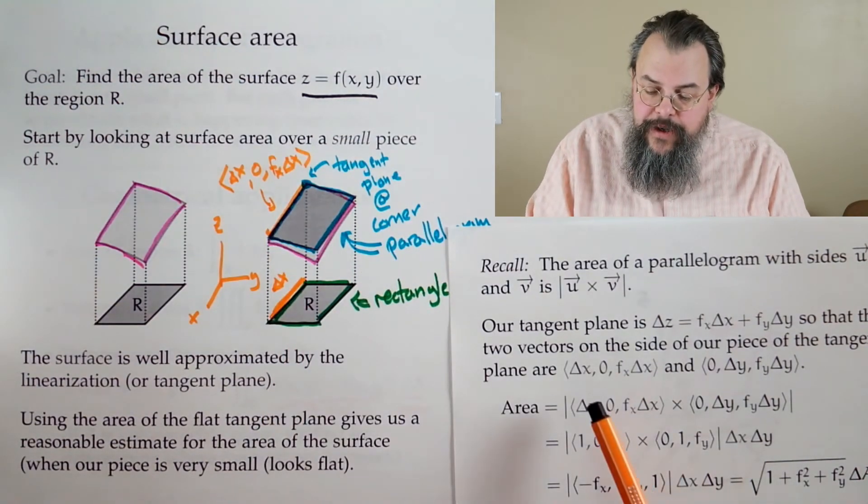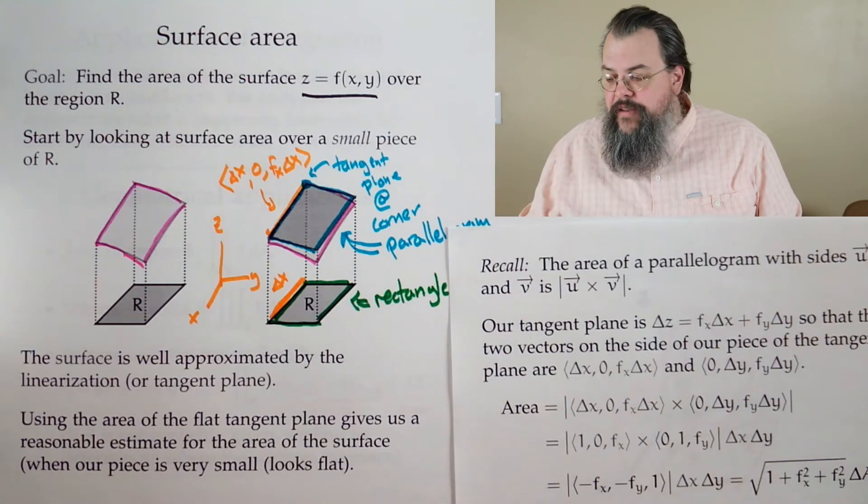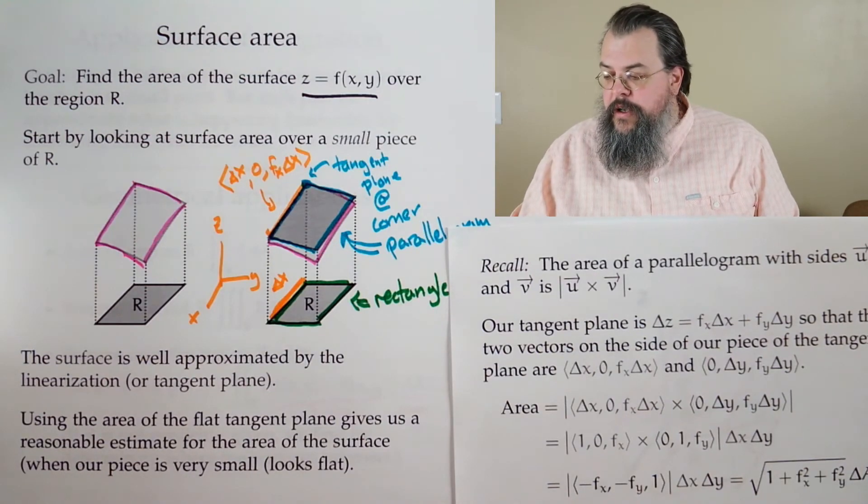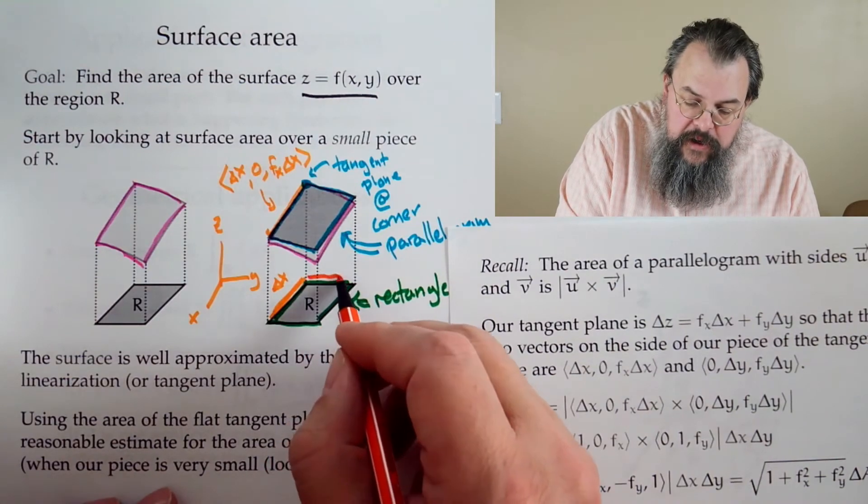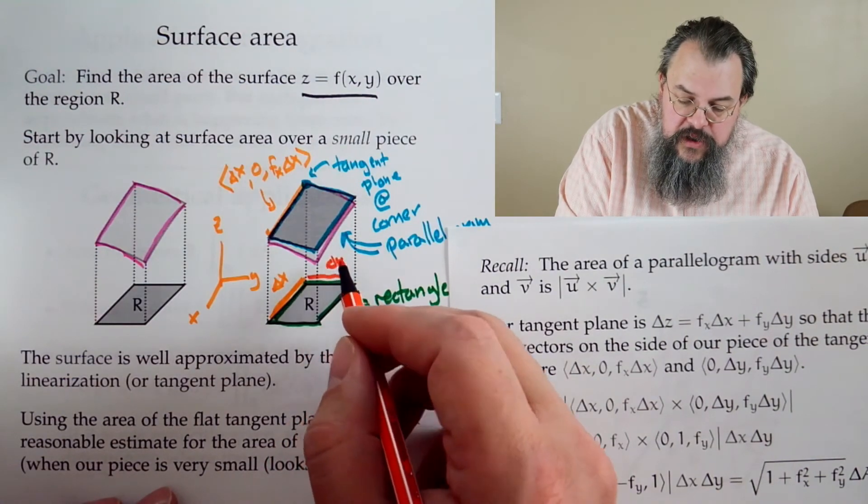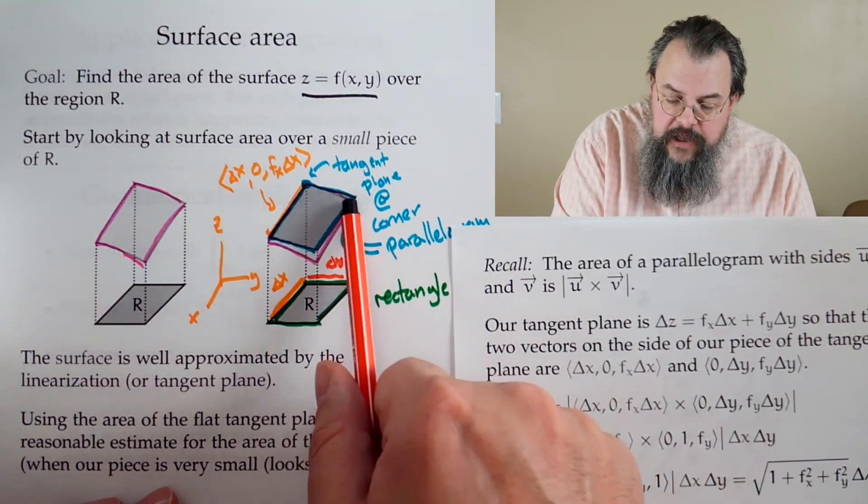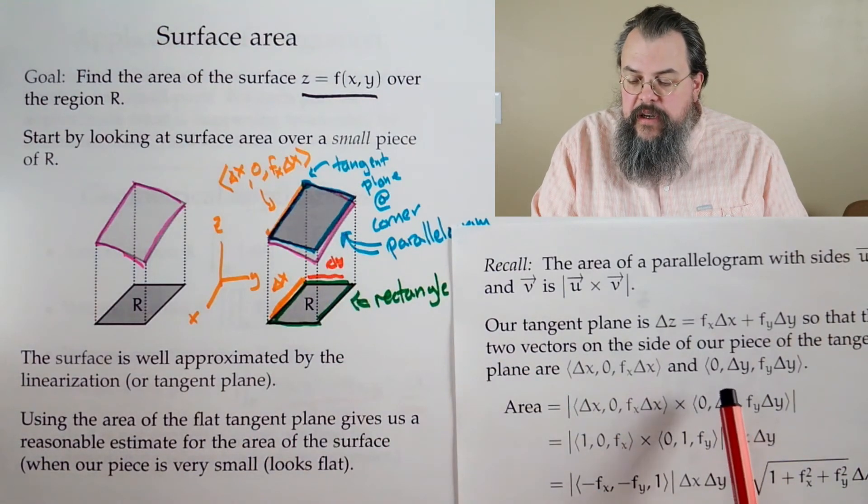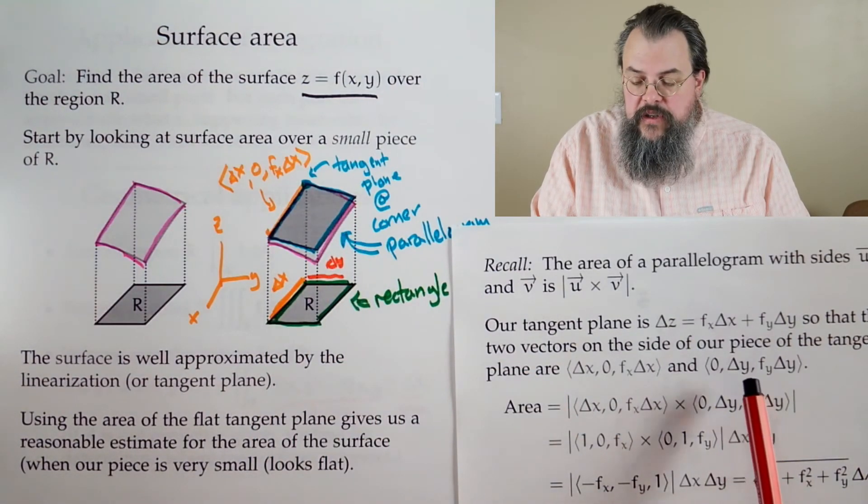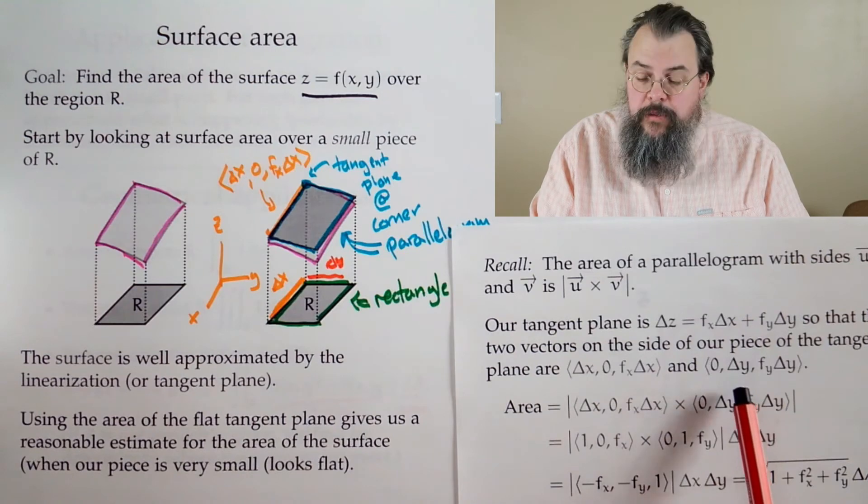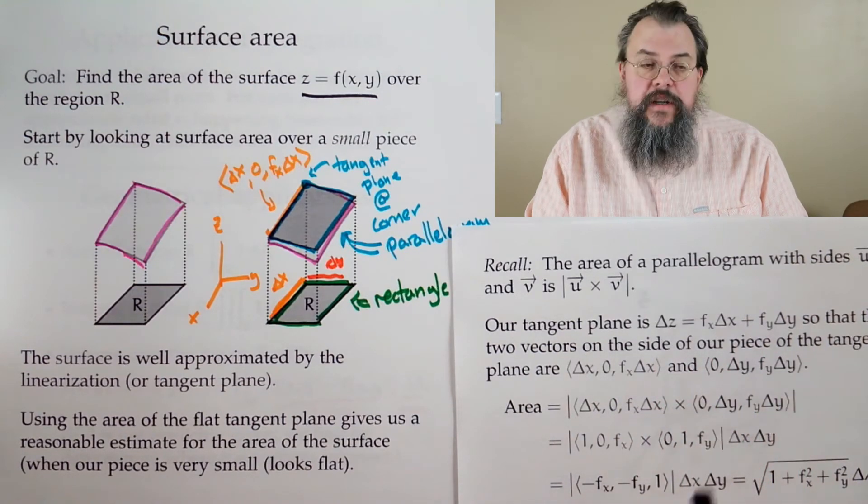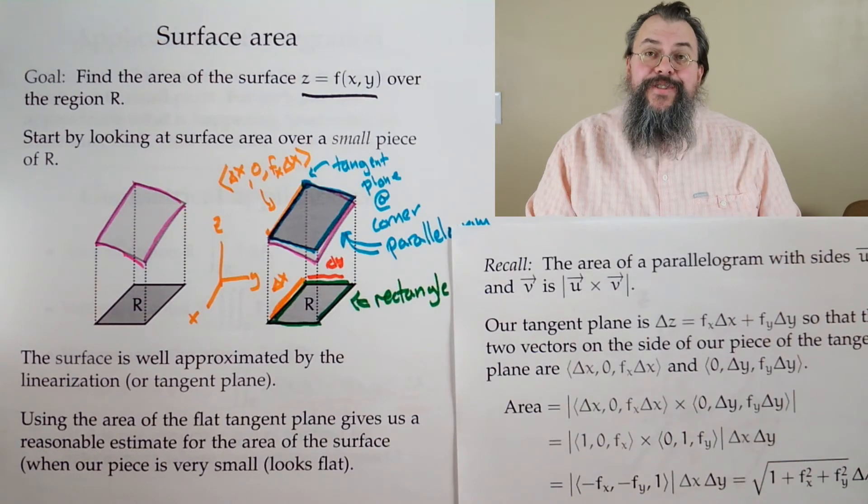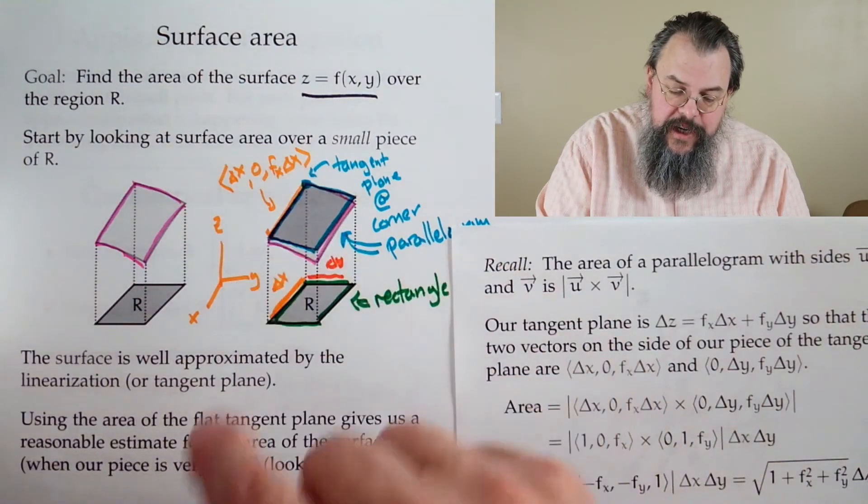The same type of argument, if you apply it to the other side, where it's this side here, that's just going to be a change in y. There's no change in x. Change in y is Δy. And then your change in z is f_y Δy. Those are the two vectors upstairs.